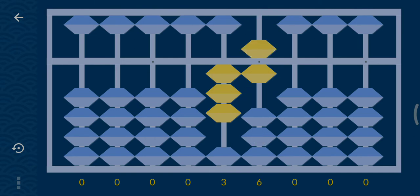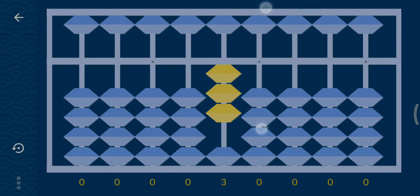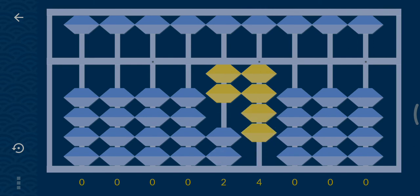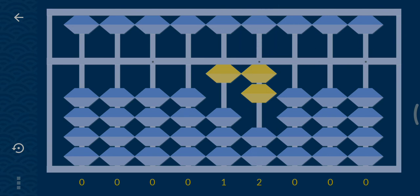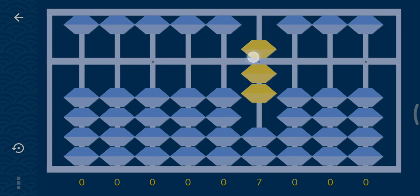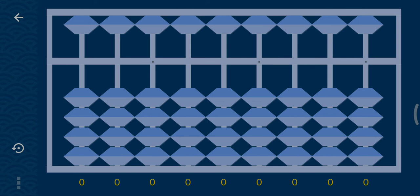Again minus 6 directly. Again minus 6: minus 10 plus 4. Again minus 6: minus 10 plus 5 minus 1. Again minus 6 directly. Again minus 6: minus 10 plus 5 minus 1. Again minus 6 directly, and the answer is 0.